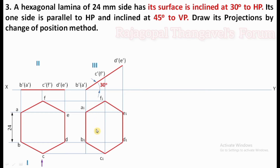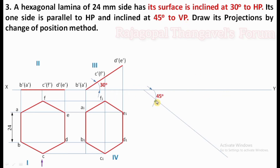Notice the difference between step three and step four — there is a reduction in size of the hexagon after tilting the surface with respect to HP. Now we have to reproduce this same shape of hexagon but with the condition that it is inclined at 45 degrees to VP. We can take a simple thin line at 45 degree inclination. Now we have to draw the A1, B1 side which is on XY; this side must be kept on this 45 degree inclination line.